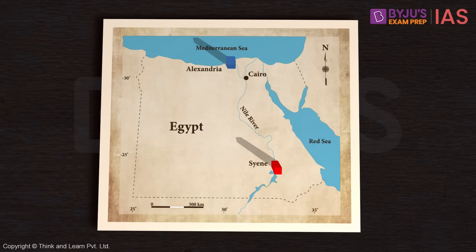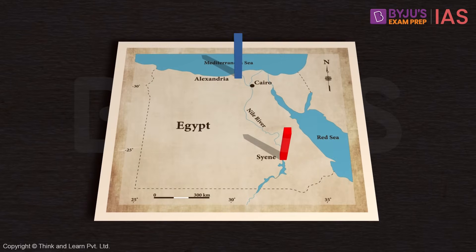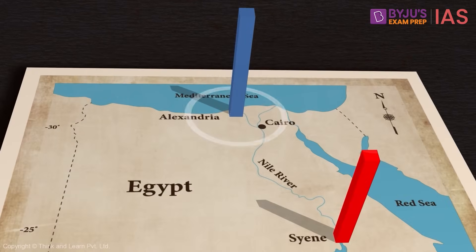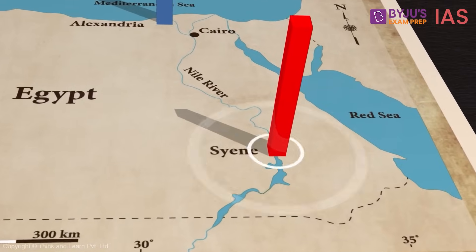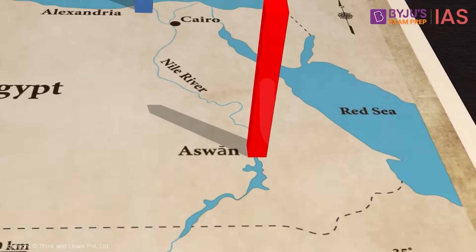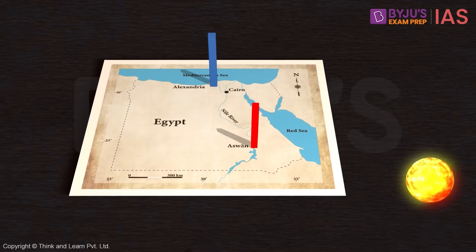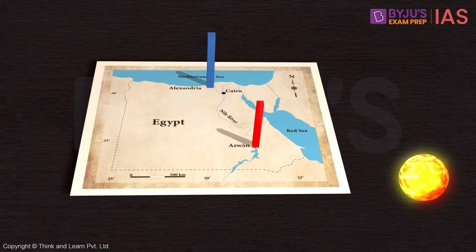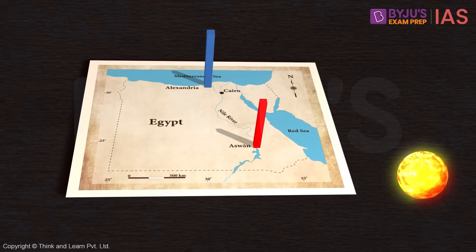So here is a map of Africa. On this, we have placed two stakes, one at the city of Alexandria and the other at the city of Sin, also known as Aswan. And here we have the sun. So sun's rays are falling on both the stakes and are able to produce shadows.